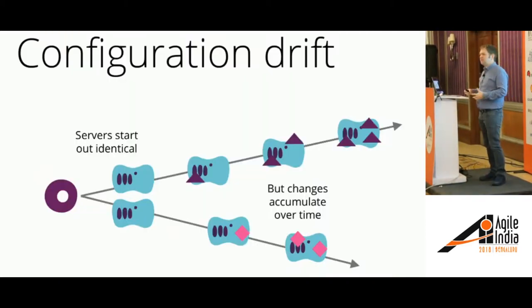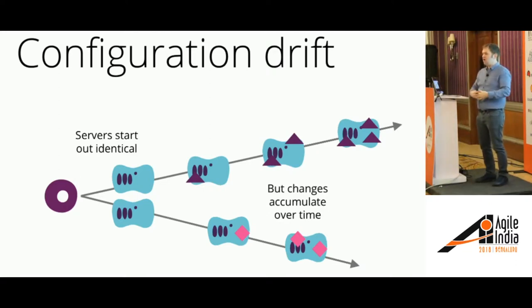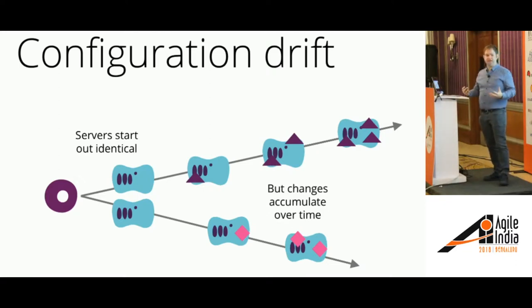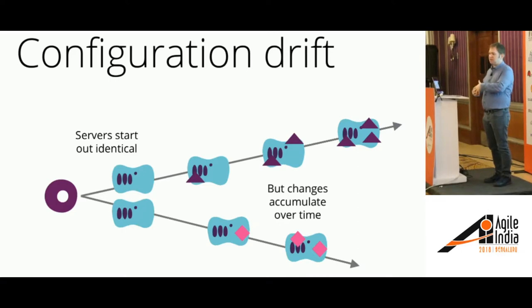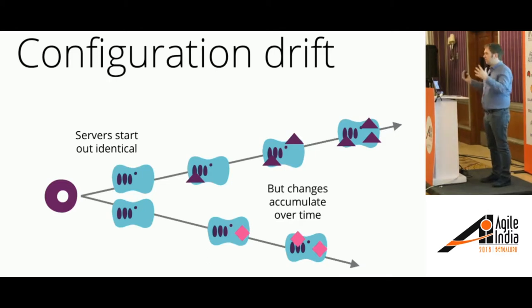This is the thing called configuration drift. Even if you start with servers that are identical — created from the same original image — over time they become more and more different. You go and fix a problem on one server and now that server's different from the others. Or an application needs a different version of Java, so you update that one. Whatever it is, things over time get all out of whack.